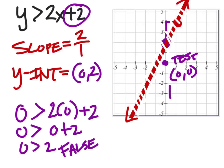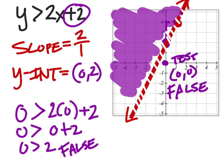Since this is false, this test point gave us a false statement. We need to shade the other side of that line. So that looks pretty.